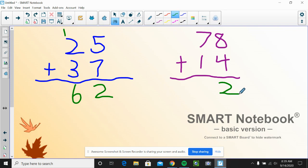And again, the 1 is in the tens place, so I'm going to bring it up here in the tens place column. And now I'm going to do 1 plus 7 plus 1, which equals 9. So 78 plus 14 equals 92.